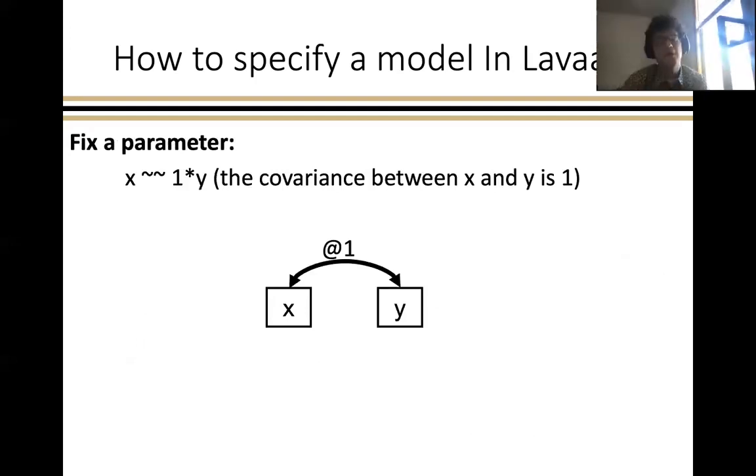To fix a parameter in a Lavaan model, you would write the value that you're fixing it to on the right hand side of the equation, followed by an asterisk, and then whatever variable name comes on that side. You always put the value you're fixing it to on the right hand side, so you would not write one star x tilde tilde y, but what this specifically does here is it fixes the covariance between x and y to one.